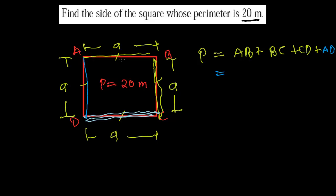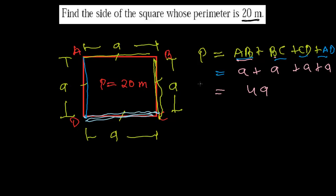Since all sides are equal — AB, BC, CD, and AD are all 'a' — the sum of all sides is 4a. The perimeter equals 20 meters, so 4a = 20.